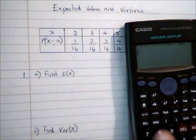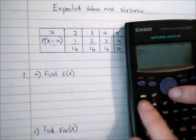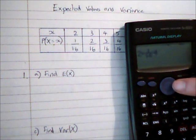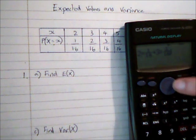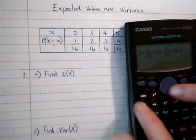So I'm going to do that on the calculator, so 2 multiplied by 16, add 3 multiplied by 2 over 16 and so on.